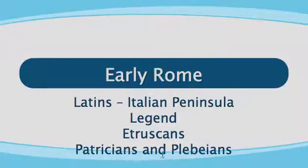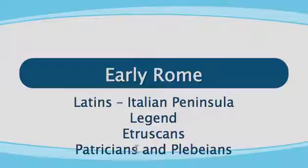The last thing on this side covers the two social classes of the ancient Romans. First, the Patricians. The Patricians were mostly the ruling class — wealthy landowners and nobles.